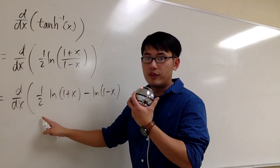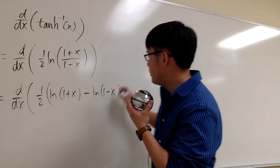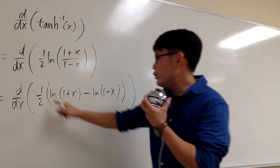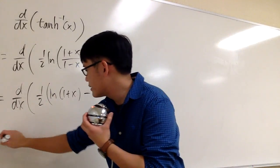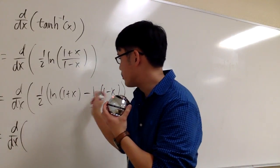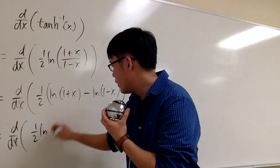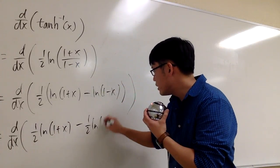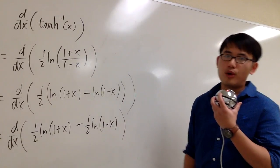But we have the 1 half all the way in the front, so we technically need a big parenthesis right here. And if you would like to distribute the 1 half real quick, so let's do that. So d dx 1 half into the parenthesis, we have 1 half ln 1 plus x minus 1 half ln 1 minus x. And finally, we are ready to go.